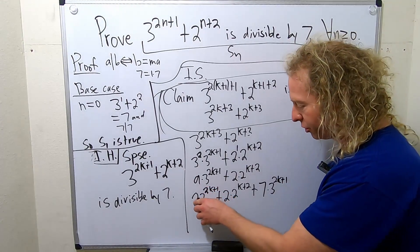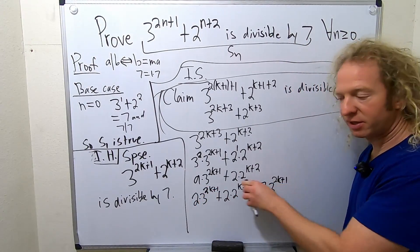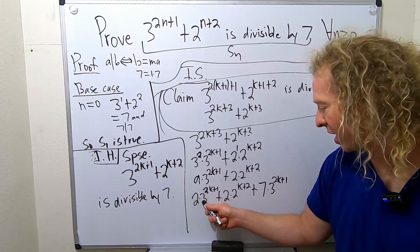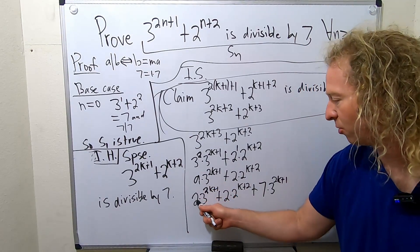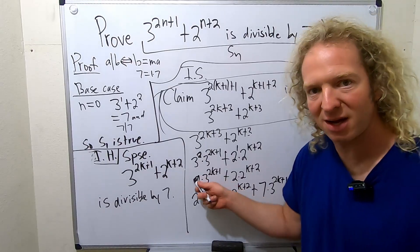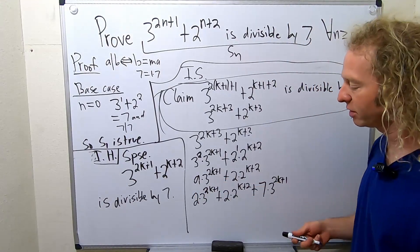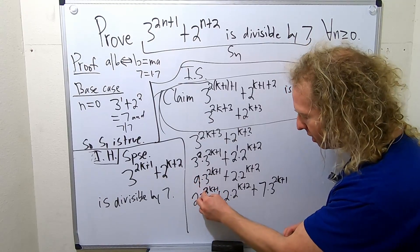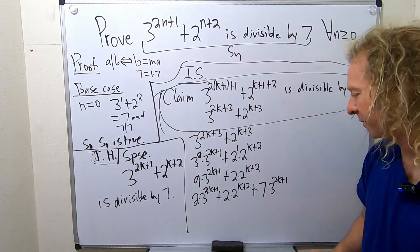So, 2 of these plus 7 of these is 9 of these. Think of it as x, right? 9x is equal to 2x plus 7x. 2 blah plus 7 blah is 9 blah. People have a really hard time with this. Again, it's just 2 of these plus 7 of these. Think of it as a variable, right? Same thing.